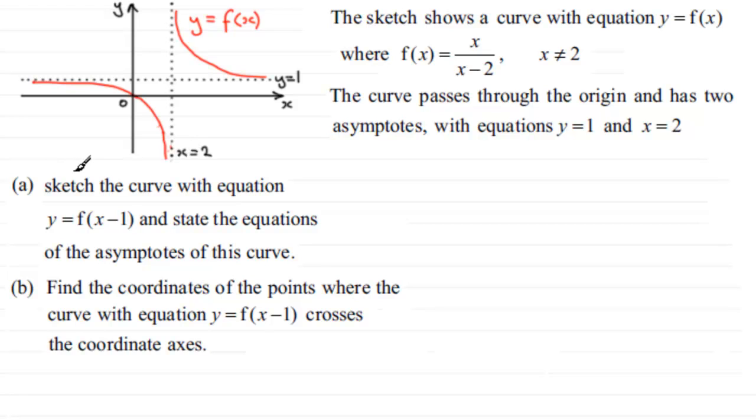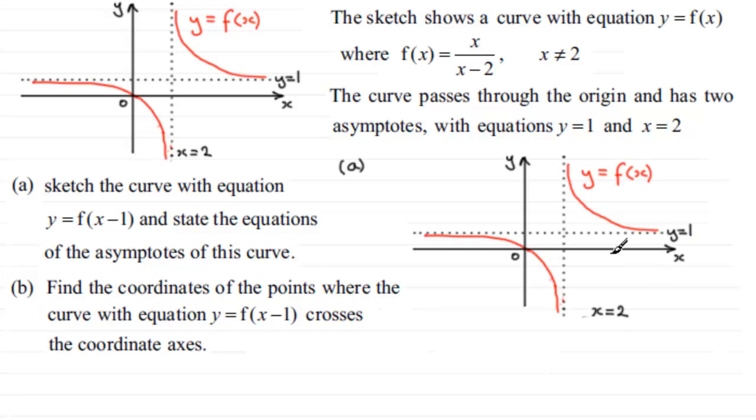What we've got to do in Part A is sketch the curve with equation y equals f of x minus 1 and state the equations of the asymptotes of this curve. So for Part A, to sketch this graph, what I'd want to do is just copy the old graph down again.